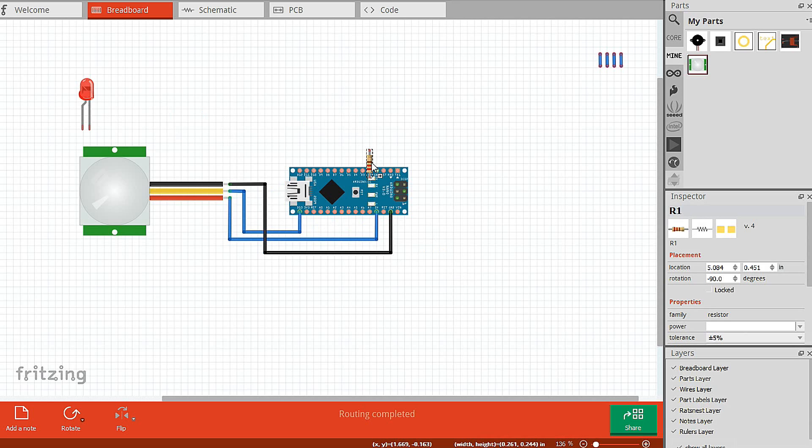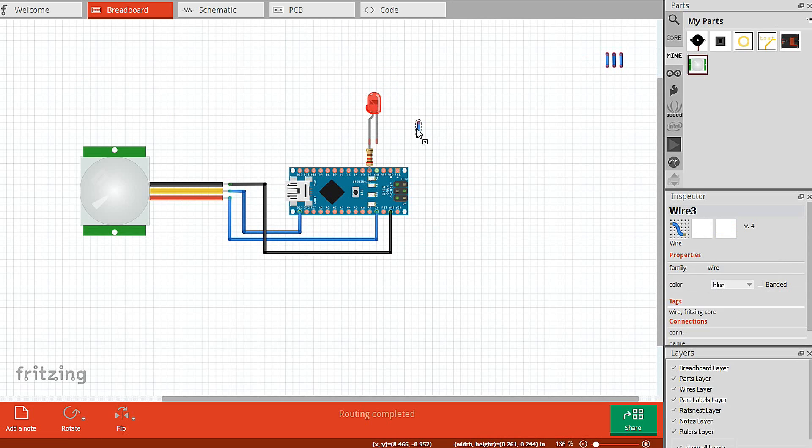Now, connect the LED along with the 220 ohm resistor to the D2 pin of Arduino. That's it. Now, you just need to upload the code and test if everything works the way it should.